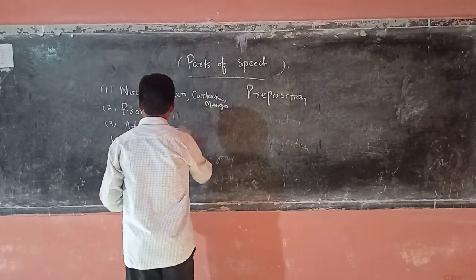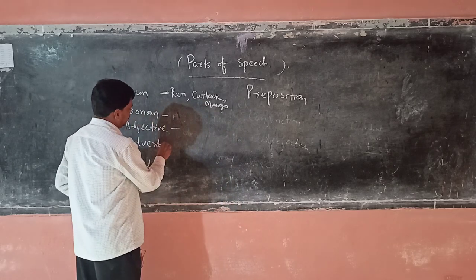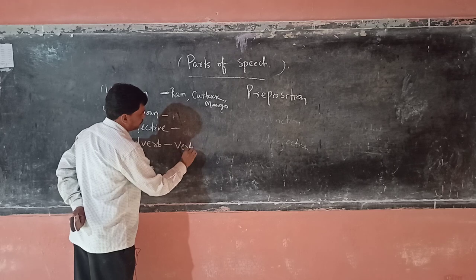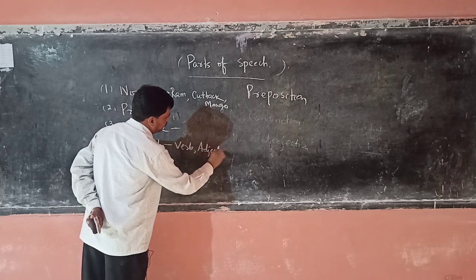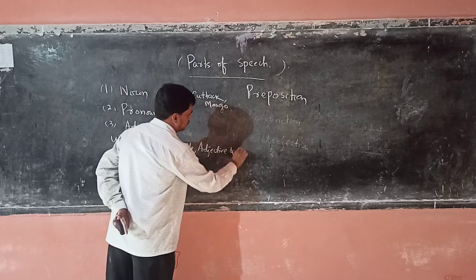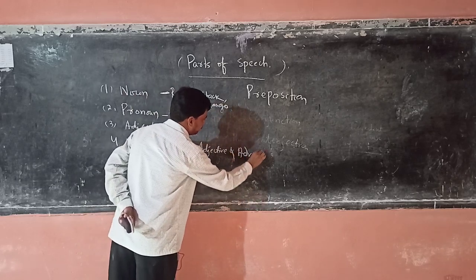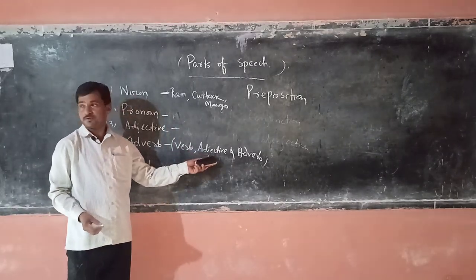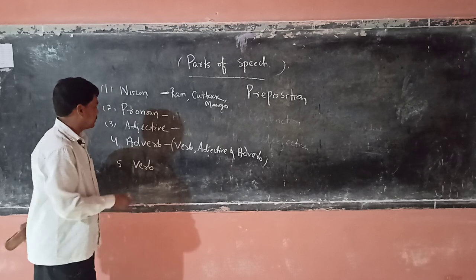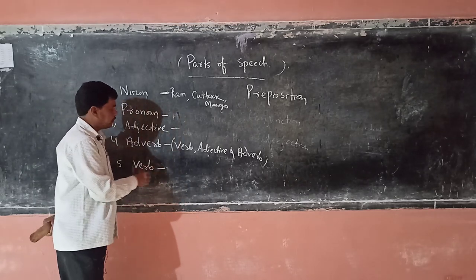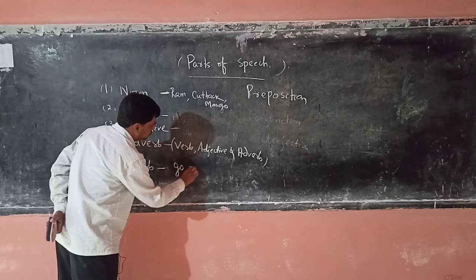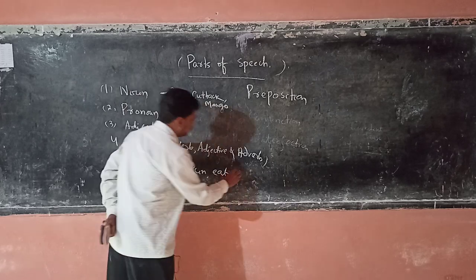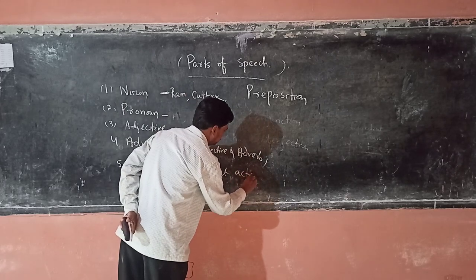Then adverb — adverb modifies a verb or an adjective. Then verb — examples of verbs are go, run, eat. We know these as action verbs.